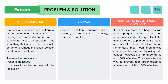Next pattern is Problem and Solution. This is a pattern of organization where information in a passage is expressed as a dilemma or concerning issue — a problem — and something that was, can be, or should be done to remedy this issue — a solution or attempted solution. It answers: What is the issue? How was it resolved, or how will it be resolved? Example: It seems like there has been a surge in teen pregnancies these days. Teen pregnancies make it very difficult for young mothers to pursue their dreams. Fortunately, most teen pregnancies can be easily prevented by using birth control. However, even birth control is not 100% effective. The most effective way to prevent teen pregnancies is abstinence, which is 100% effective. Notice any signal words that tell you this is problem and solution.